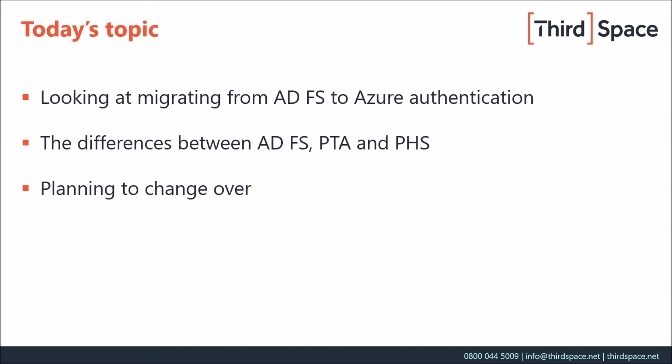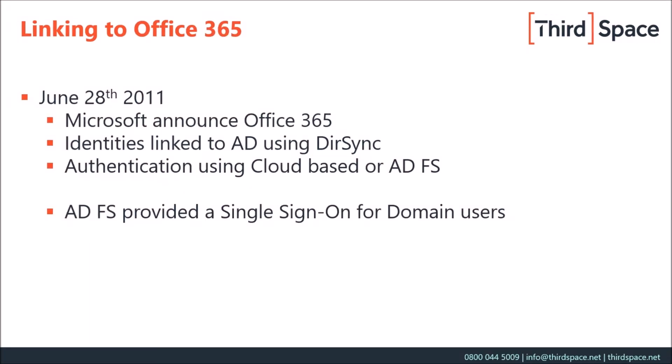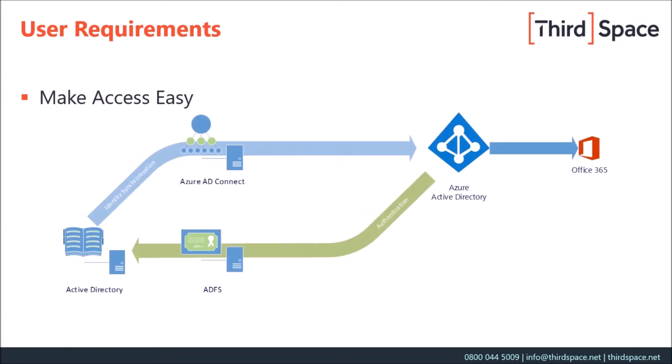We're also going to talk a little bit about the history of Office 365. Microsoft brought out Office 365 back in June 2011. Before that, it had been around in a couple of flavours, mostly around BPOS. Identities were linked to your on-premises Active Directory using DirSync, and authentication could be done either cloud-based or using ADFS. ADFS was the only way in those days that we could actually get single sign-on, allowing users within a domain to access the Office 365 services without having to sign in again.